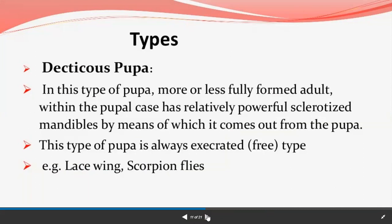Next are the types of pupa. Pupa is mainly of three types. The first type is decticous pupa. In this type, the more or less fully formed adult within the pupal case has relatively powerful sclerotized mandibles, by means of which it escapes from the pupal case. The adult food habits and mandibles are the same. This type of pupa is always a free type, and examples include lacewing and scorpionflies.